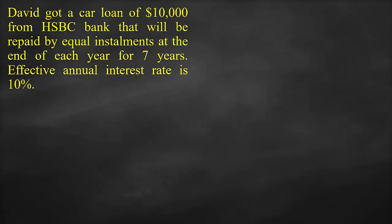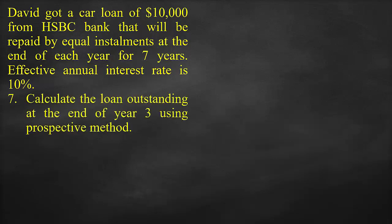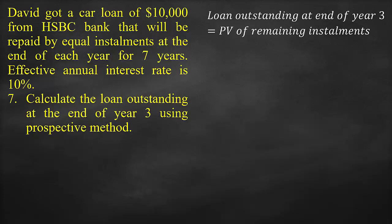The next part of the question is to calculate the loan outstanding at the end of year 3 using the prospective method. The prospective method formula is the present value of unpaid installments. We use the present value of ordinary annuity because there are future equivalent unpaid installments.